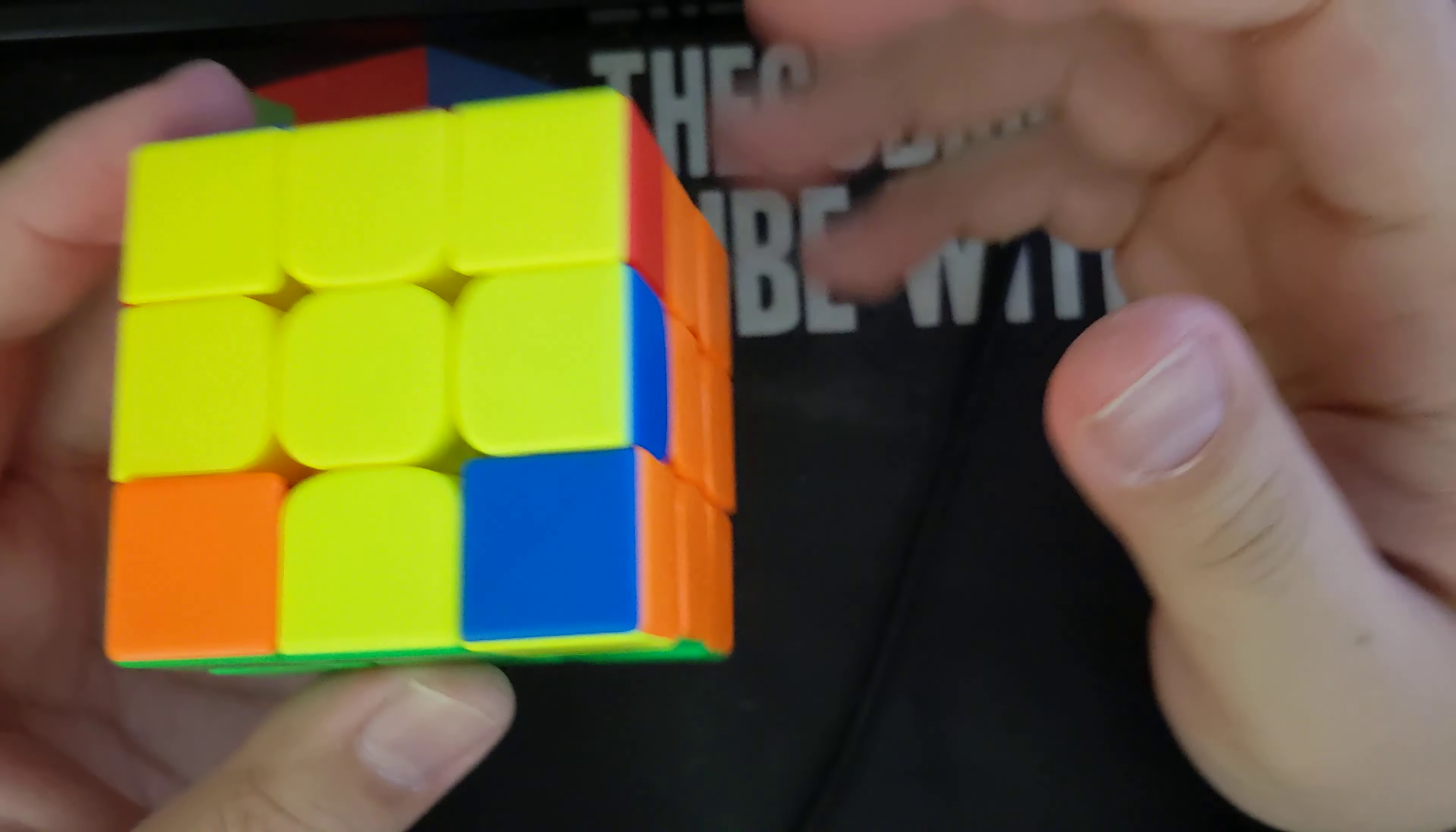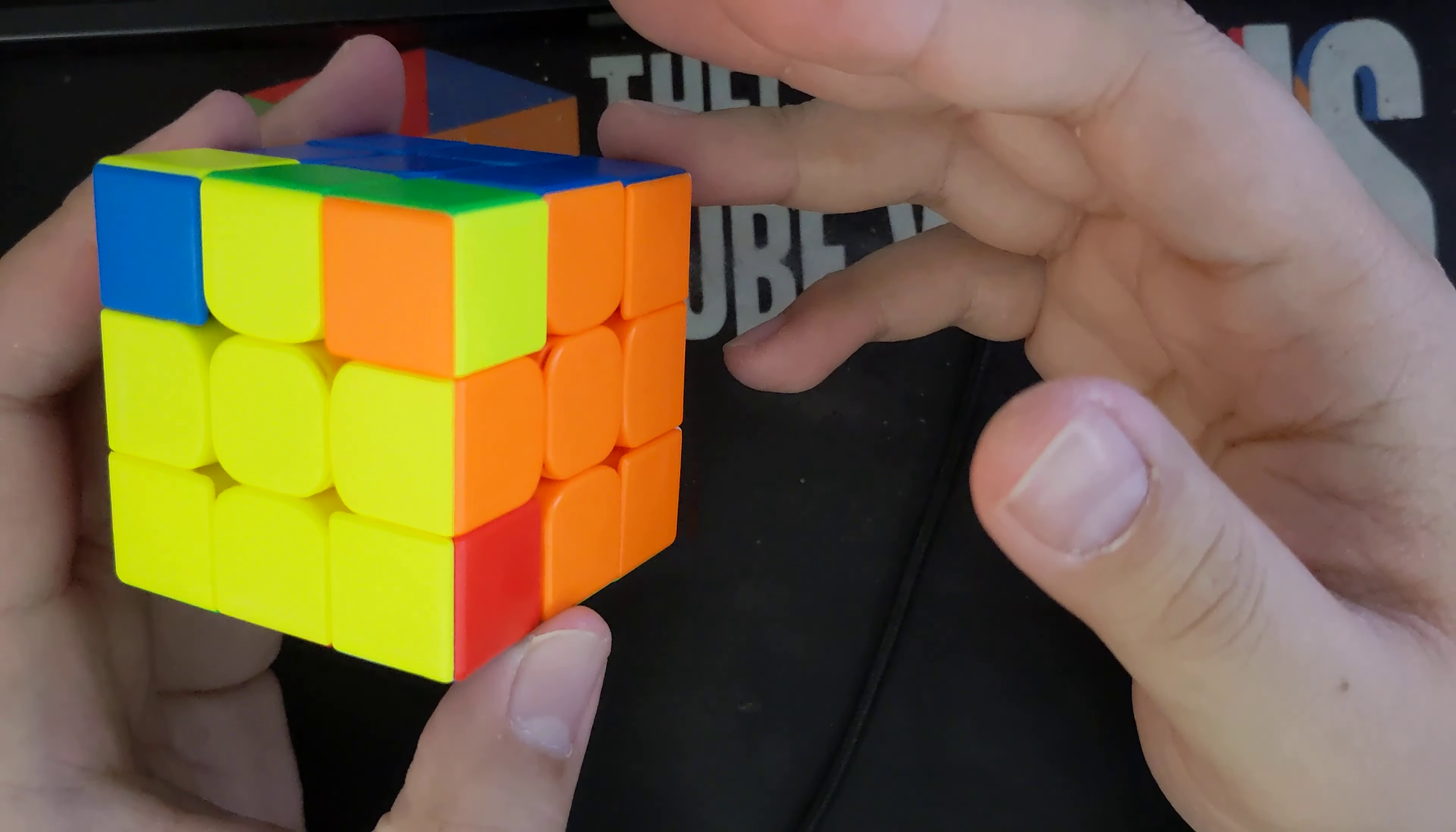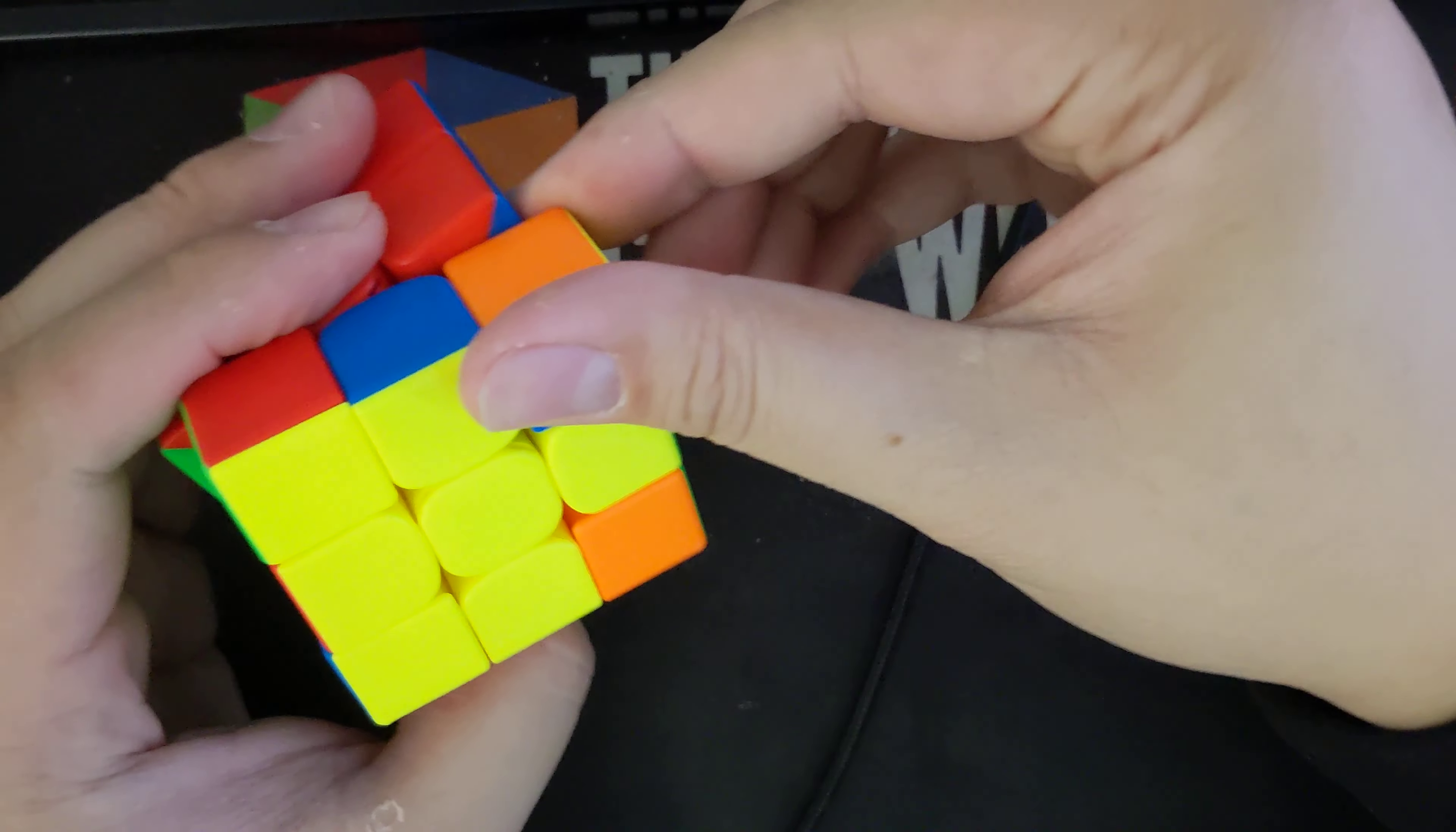All right, so here we have an impossible case. This case will never show up in any algorithm sheet or whatever. So what we do here is we just go ahead and twist any of the corners to make it into a solvable case. In this case, I'm just going to go ahead and twist this corner this way.